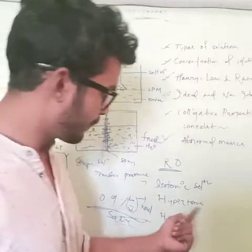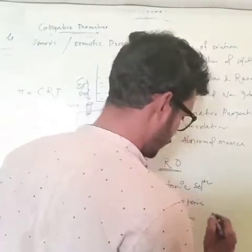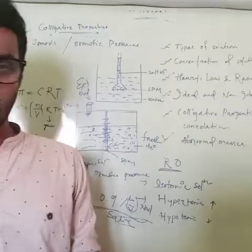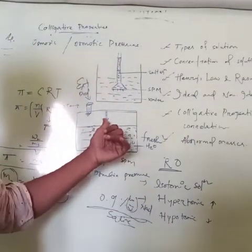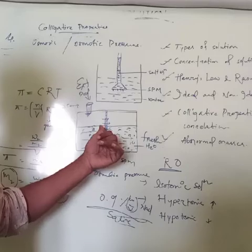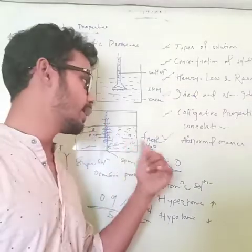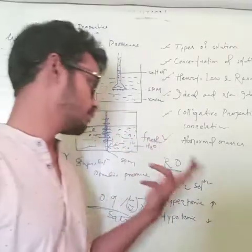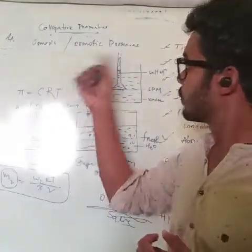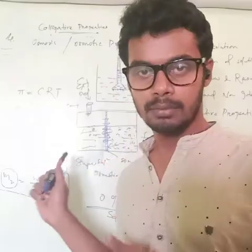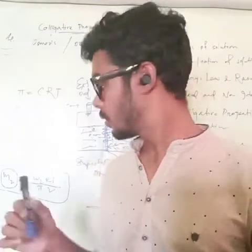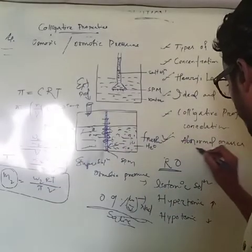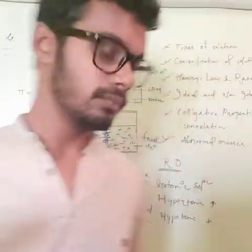Hypertonic solution is where the osmotic pressure is high, and hypotonic solution is where the osmotic pressure is very low. I hope you have understood these colligative properties. The last part to complete today is abnormal masses.